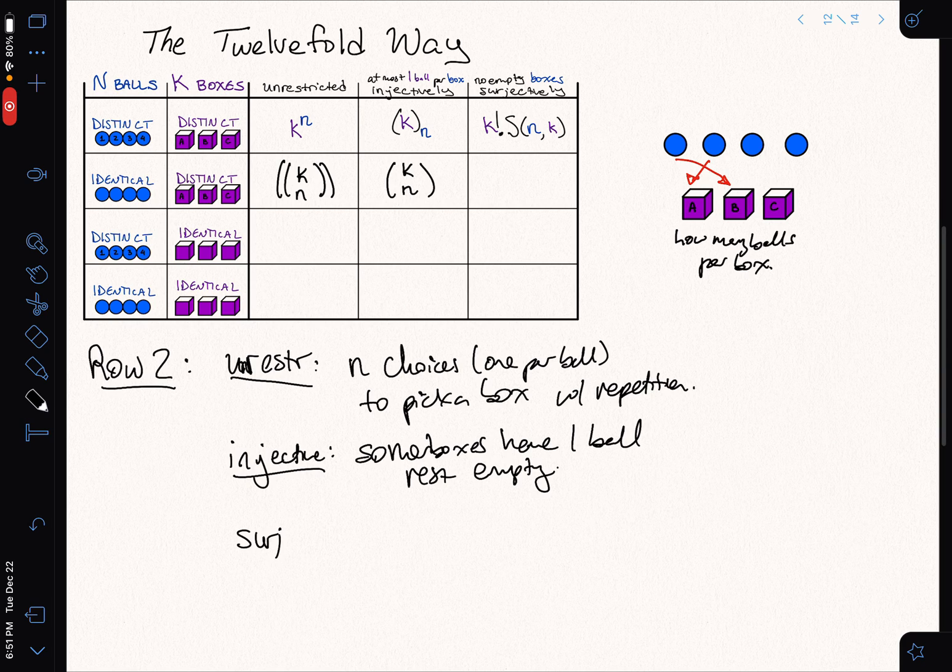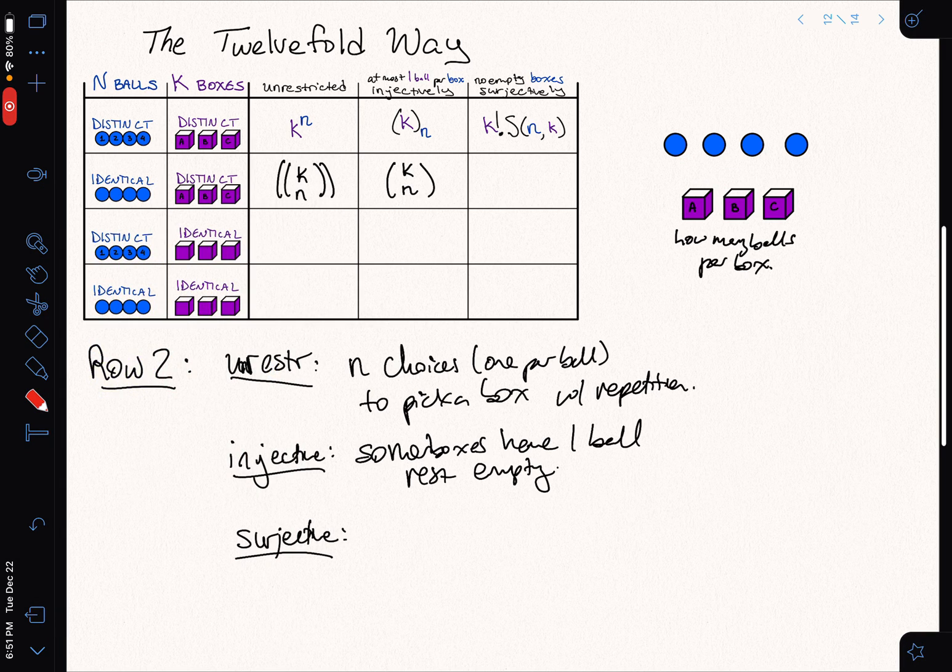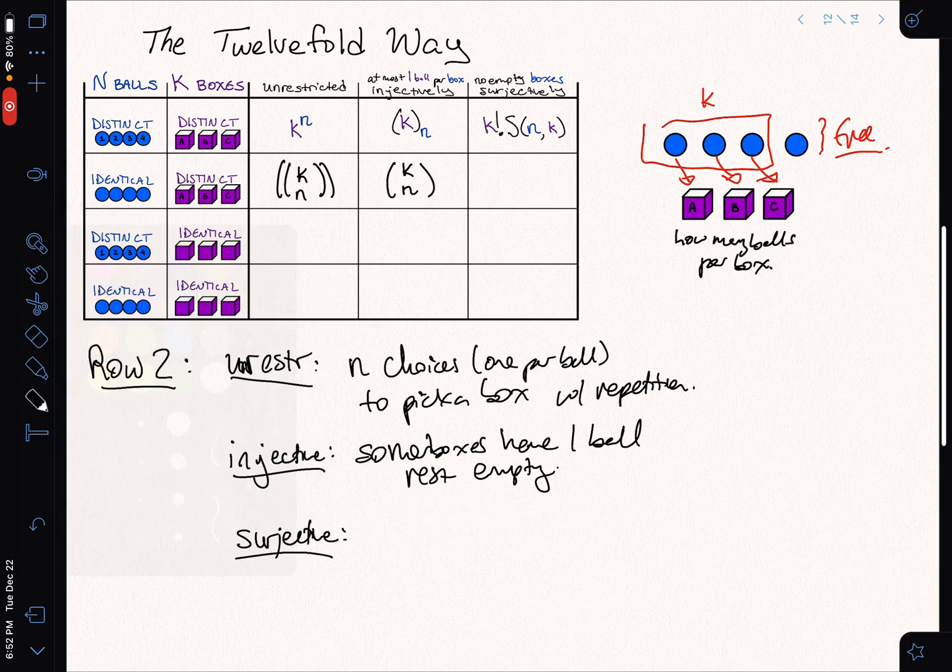What about the surjective case? So for the surjective case, an easier way to think of it is I've got to make sure that every single box gets a ball. So why don't I just take the first K balls and chuck them into the boxes, one into each. And now what I have left, I'm free to do whatever I want with. So that's back to the unrestricted case.